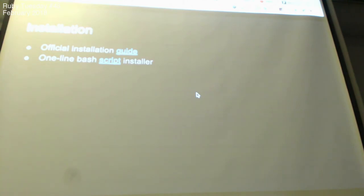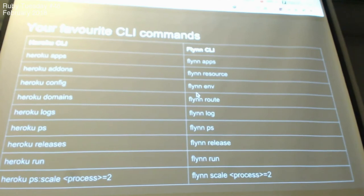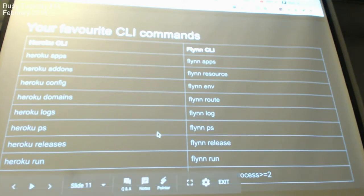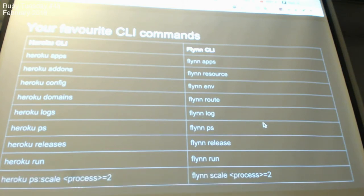Here are your favorite CLI command equivalents. Heroku apps → Flim apps. Heroku addons → Flim resource. Config → env. Domains → routes. For process scaling: in Heroku you do 'heroku ps:scale web=2'; in Flim you do 'flim scale' and then 'process=2' or whatever number you want.